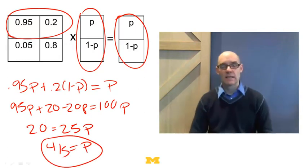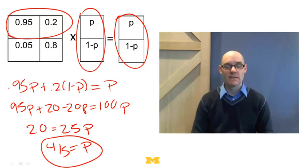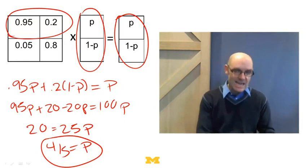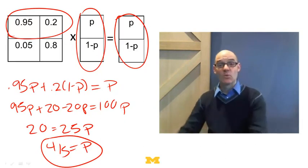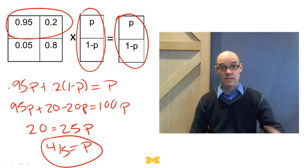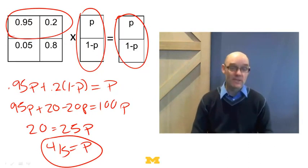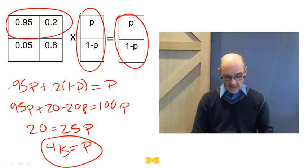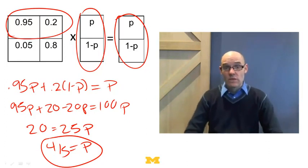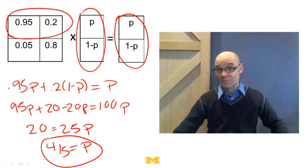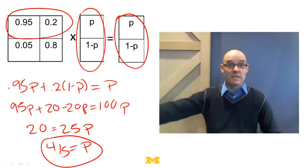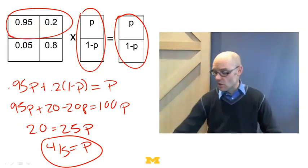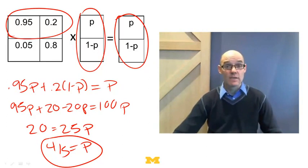So here's the surprising thing. We only end up with 80% democracies. Even though 95% of democracies stay democracies and 20% of dictatorships become democracies in each decade, we still end up with only 80% democracies. That's what's counterintuitive, and that's why having this Markov model can be really useful, because it helps us really figure out what's going to happen as opposed to just extrapolating and thinking there's this big trend towards democratization. If things continue as they are, everything's going to be a democracy.